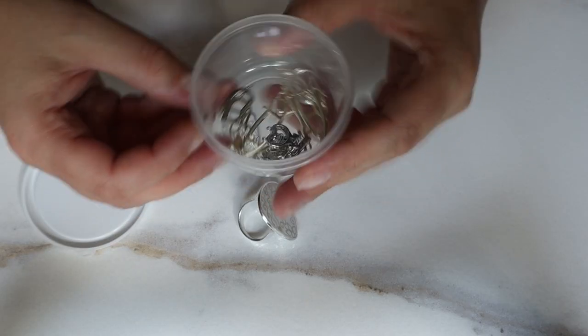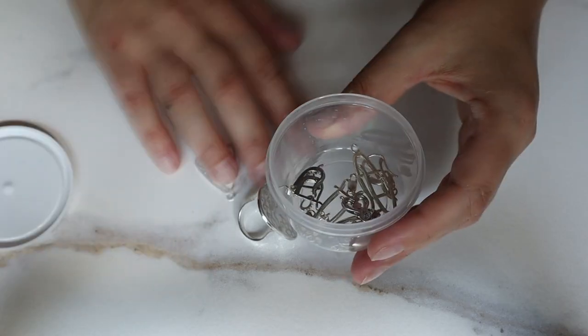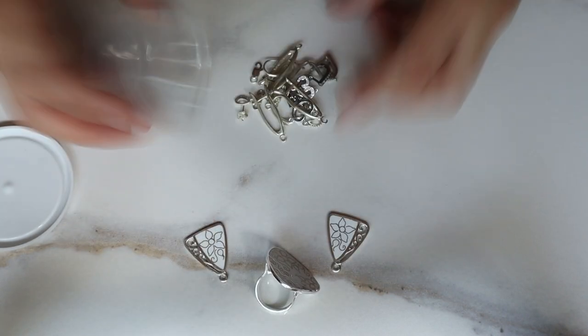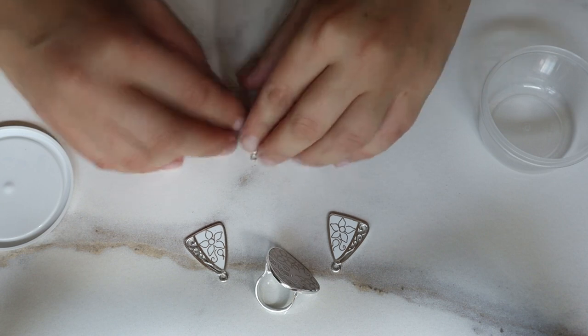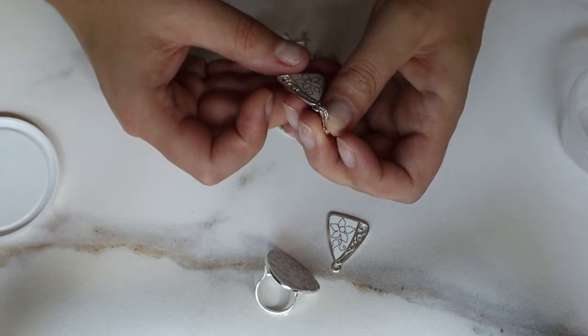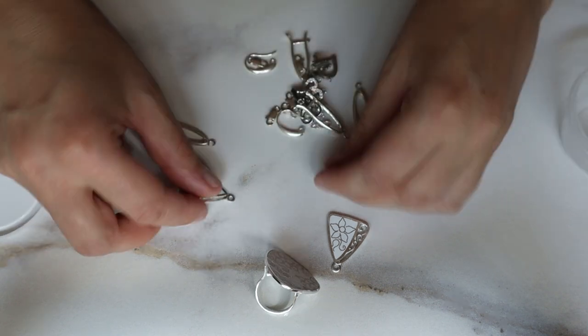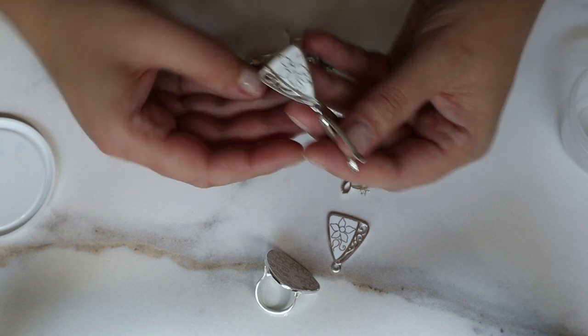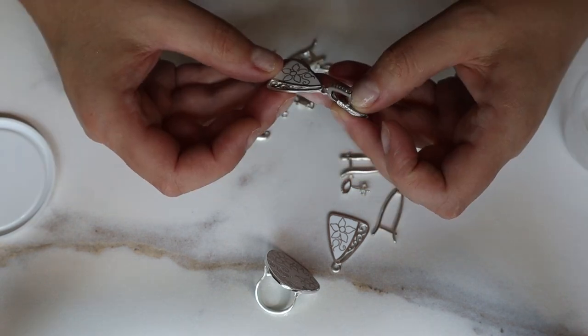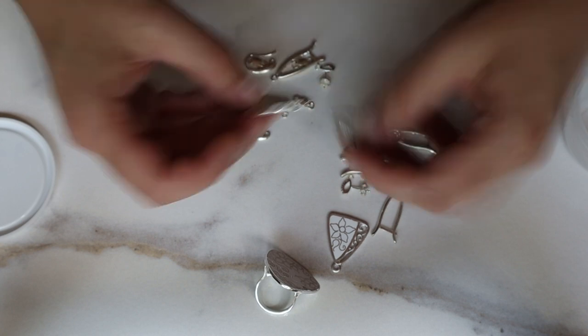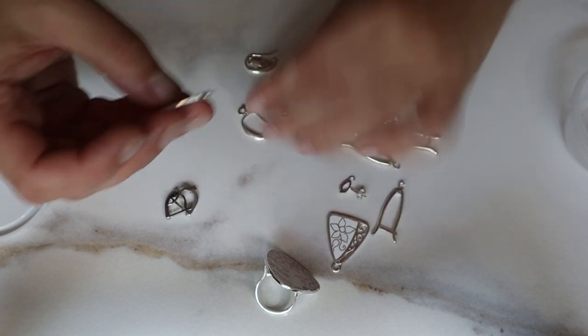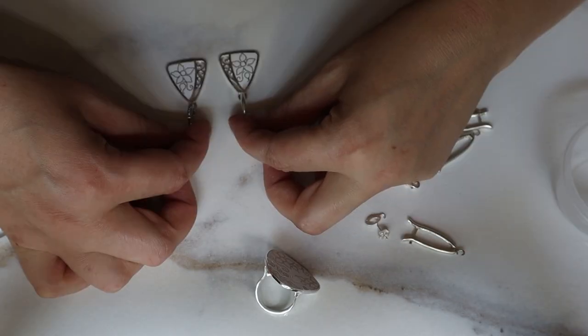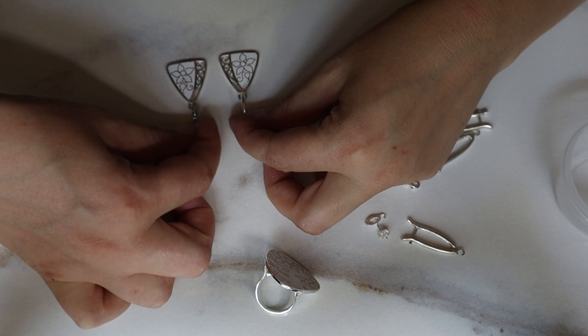Now it's time for hooks. I have to choose which is more suitable for our earrings. This one has some stones on it so I don't like it. This is quite long so I don't like it either. This earring hook has some Swarovski on it so I don't like it either. And this is the one which I'm gonna choose.